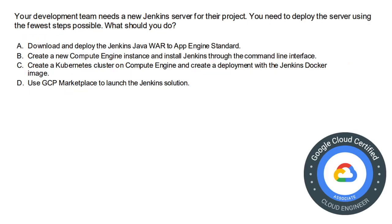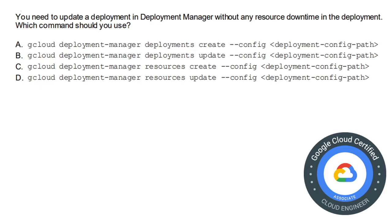Moving on to the next question. Your development team needs a new Jenkins server for their projects. You need to deploy the server using the fewest steps possible. The options are: A) Download and deploy the Jenkins Java WAR to App Engine Standard; B) Create a new Compute Engine instance and install Jenkins via CLI; C) Create a Kubernetes cluster on Compute Engine and create a deployment with the Jenkins Docker image; D) Use GCP Marketplace to launch the Jenkins solution. The correct answer is option D: use GCP Marketplace.